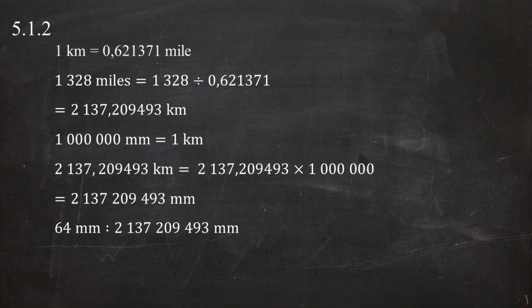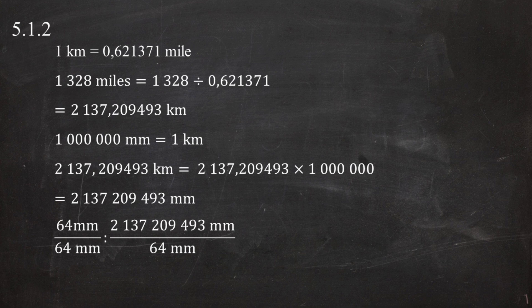Writing the map distance to actual distance as a ratio gives us 64 millimeters to 2,137,209,493 millimeters. Dividing both sides of this ratio by 64 gives us a ratio scale of 1 to 33,393,898 for this flight route map.